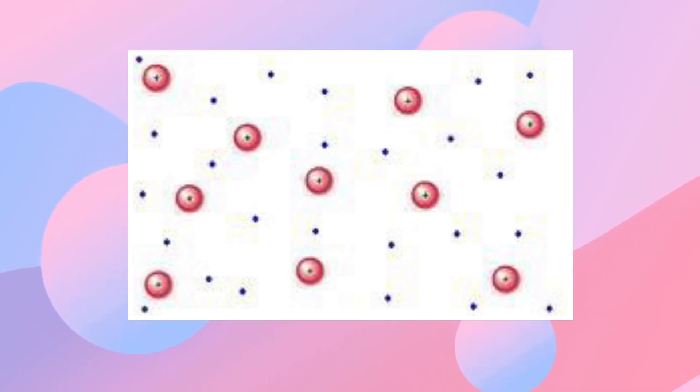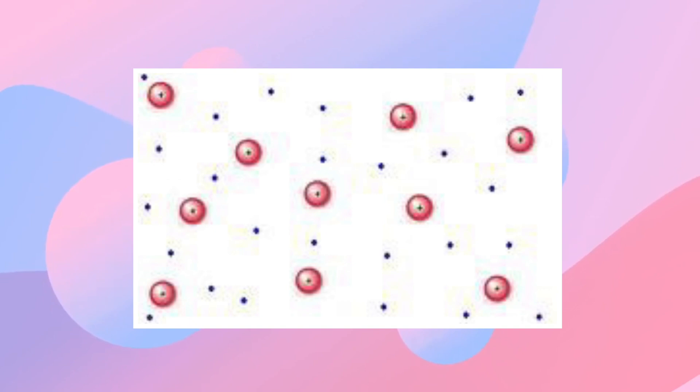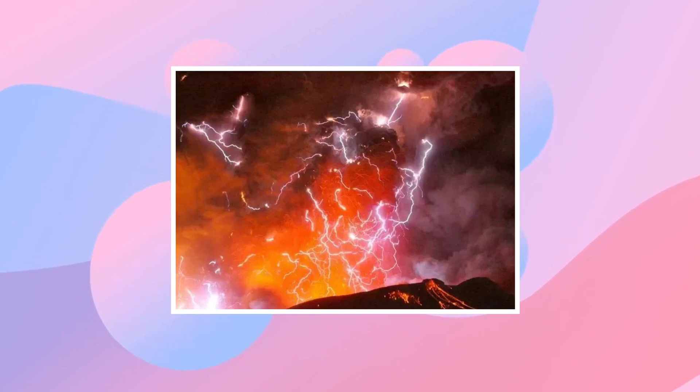Noble gases are often ionized into plasma, such as in neon signs or plasma balls. Plasma is the most common state of matter in the universe. Examples of where plasma can be found are places such as stars, fire and lightning.